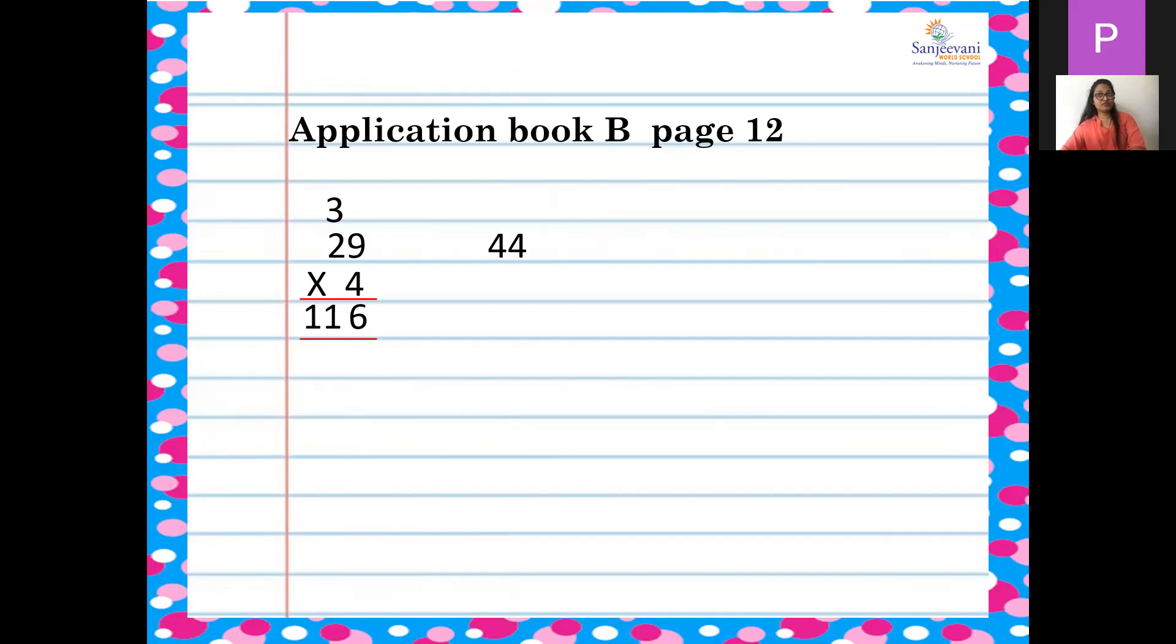Second lift, sorry, 44 into 5. So 5 fours are 20. Then again, 5 fours are 20 plus 2, 22.